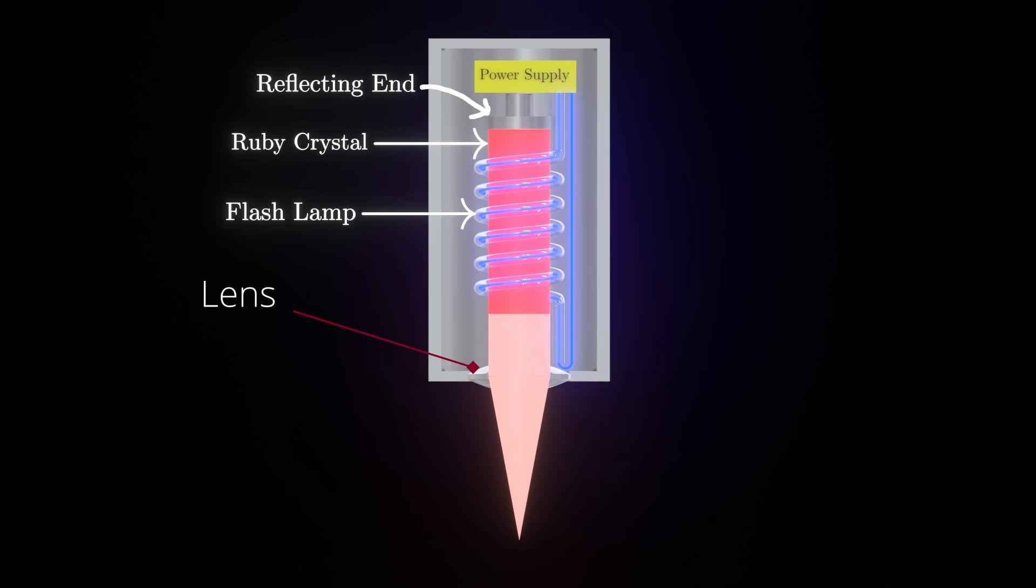When this light is focused with an ordinary lens at a spot on a workpiece, high energy density is obtained which will melt and vaporize the metal. I hope you understand how it works.